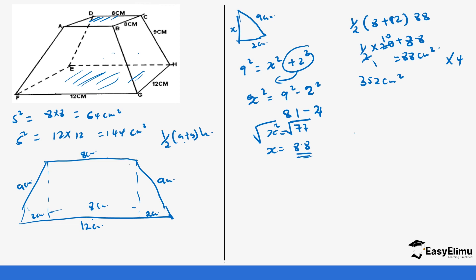After that, we add the area of the top and bottom squares. So it's going to be 64 centimeters squared plus 144 centimeters squared plus 352 centimeters squared, which gives us 560 centimeters squared. That's your answer.